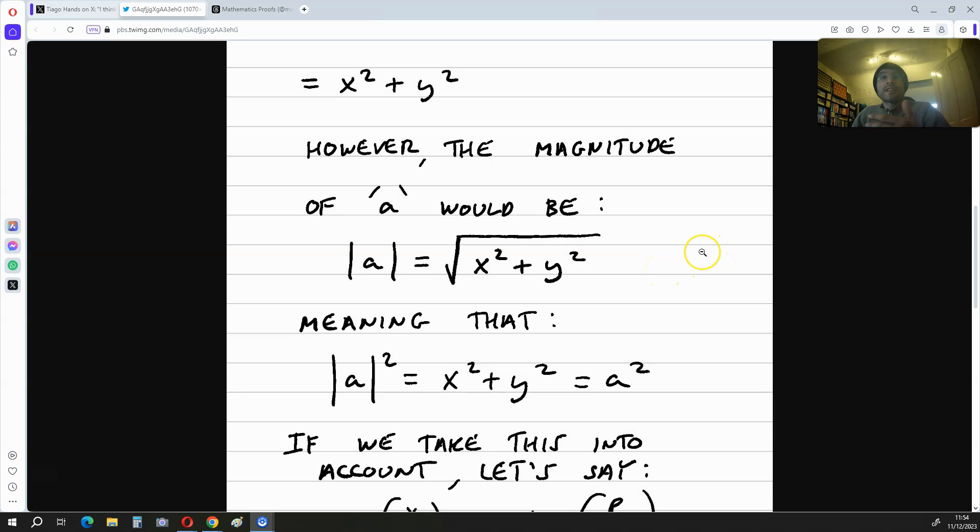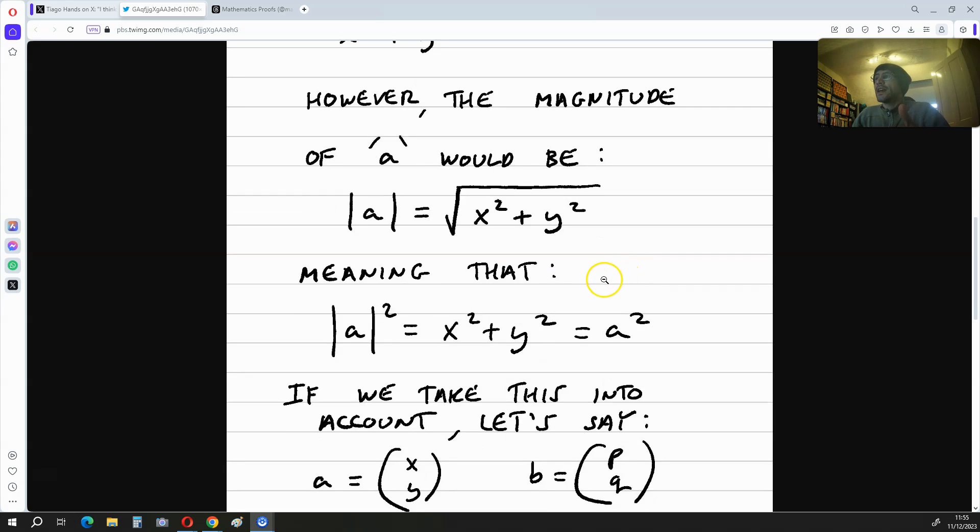If the vector a can be described by x, y, then its magnitude is going to be root x squared plus y squared because we use Pythagoras' theorem to get the magnitude of vectors. This means that the magnitude of a squared is x squared plus y squared, but that is the same as a squared. This bit of knowledge over here is crucial for our proof.